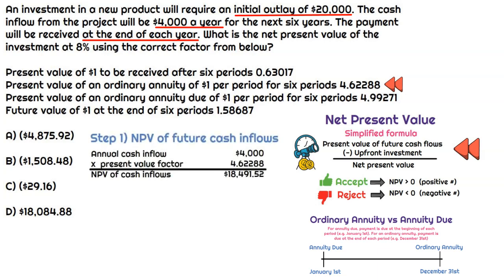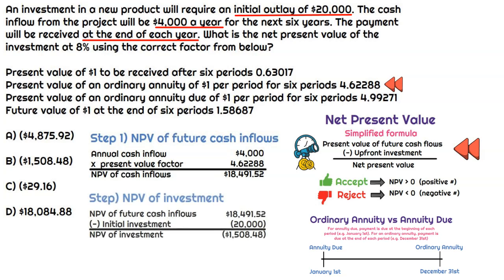So in our step one, we're going to take that annual cash flow of $4,000 and multiply by the present value factor of 4.62288. And that gives us a net present value of cash inflows of $18,491.52. So now that we have the net present value of future cash flows, well, we just need to subtract the upfront investment.